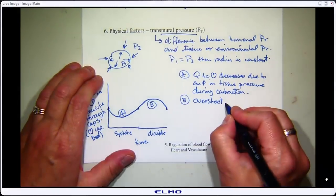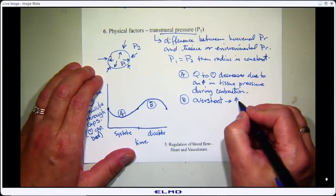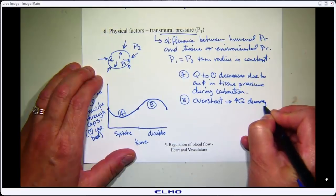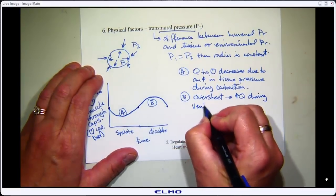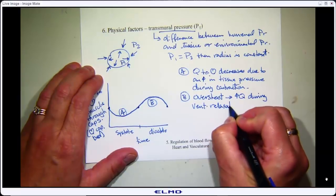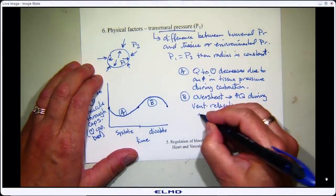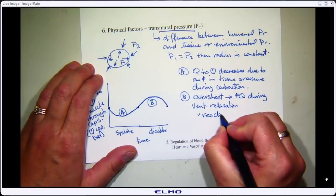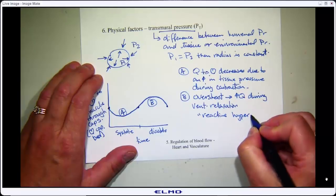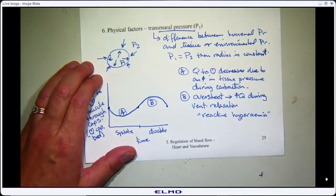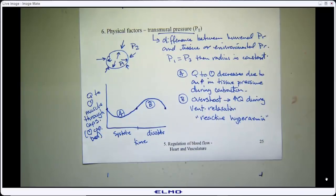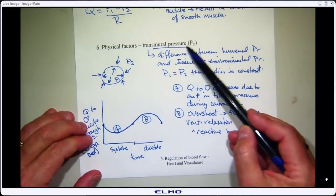Interestingly, during diastole there is an overshoot beyond baseline — an increase in flow during ventricular relaxation. This is because flow was too low for the metabolic rate during systole, so the tissues accumulated metabolic vasodilators. When the heart relaxes, there is a huge vasodilation from those metabolites. This is called reactive hyperemia: a period of increased flow after a period of decreased flow. Average flow over a minute may look constant, but beat-to-beat flow is absolutely not, because of this transmural pressure issue.